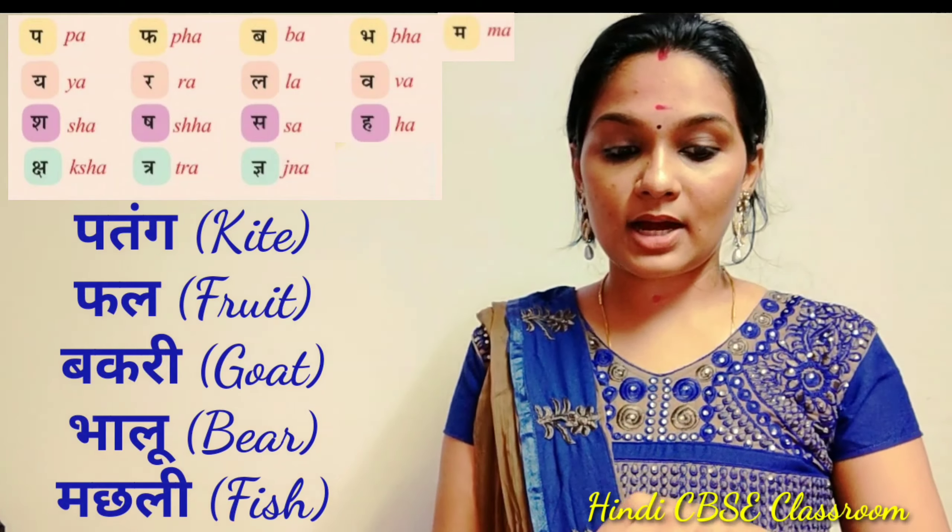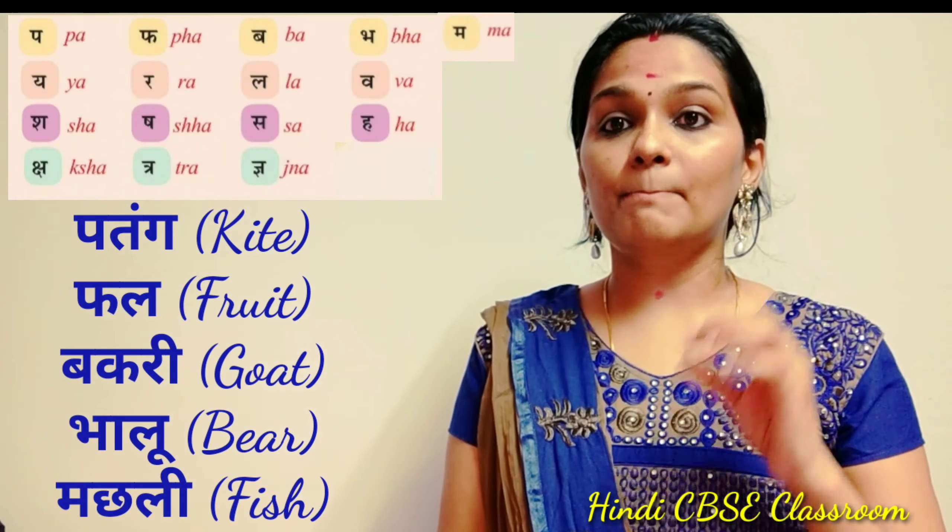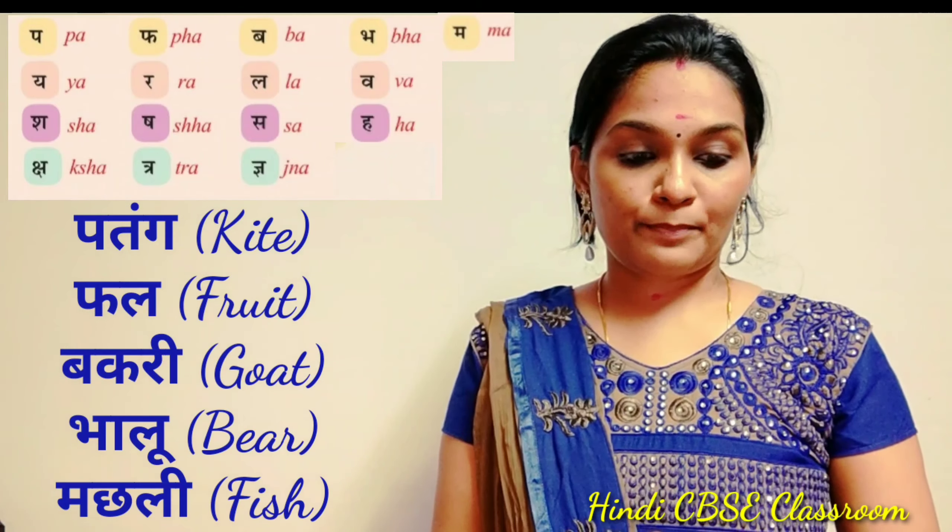Then comes Pa, Pha, Ba, Bha, Ma. Pa for Patang (kite), Pha for Phal (fruits). Ba for Bakri (goat), Bha for Bhalu (bear). Ma for Machli (fish).